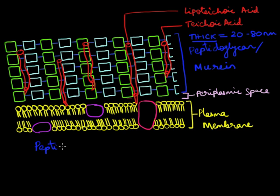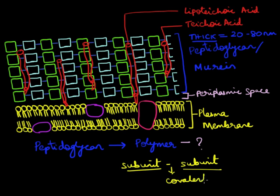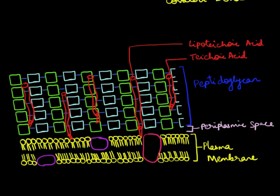This thick peptidoglycan layer is a characteristic feature of a Gram positive cell wall. Peptidoglycan is a polymer. A polymer is formed when small subunits, called monomers, are attached to each other by covalent bonds.